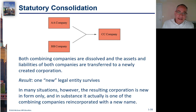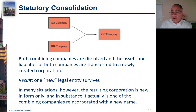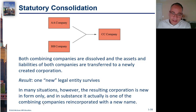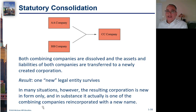A statutory consolidation is where you create a new company, and all of the assets of the acquiring company and the acquired company are moved into the new parent company. There is one legal entity that survives, with all of A and B's assets becoming part of C. Legally it's a new corporation, but financially, in substance, it's really the two companies as one. A lot of times they'll still operate with two sets of books that need to be consolidated, but legally they'll be one corporation.